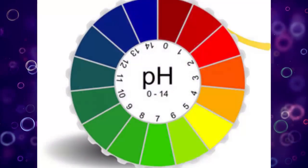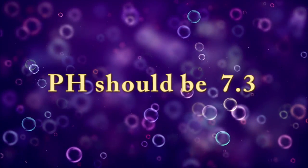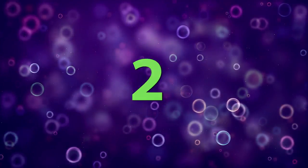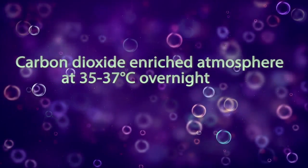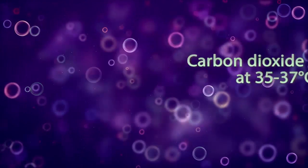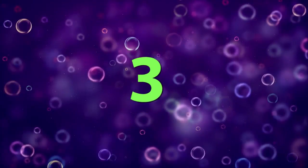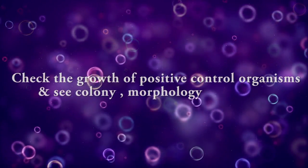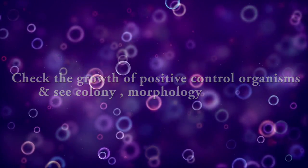1. The pH of the blood agar should range from 7.2 to 7.6 at room temperature. 2. Incubate the plates in a carbon dioxide enriched atmosphere at 37 degrees Celsius overnight and check whether any contamination is present or not. 3. Check the growth of positive control organisms and observe colony morphology.